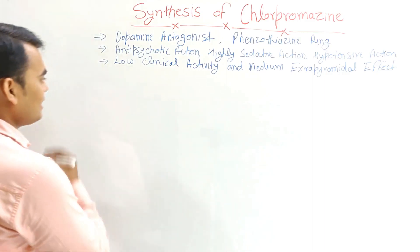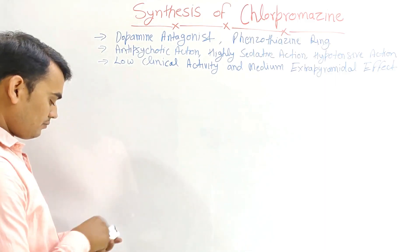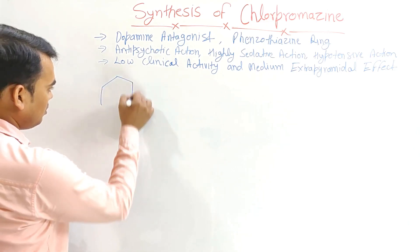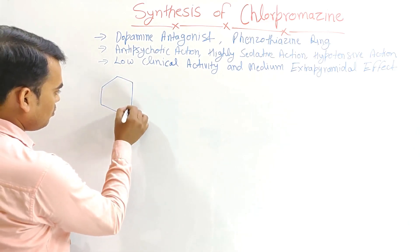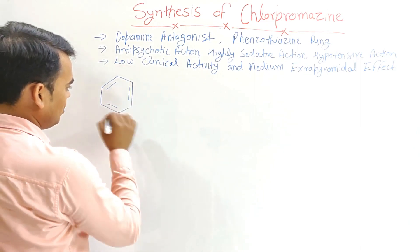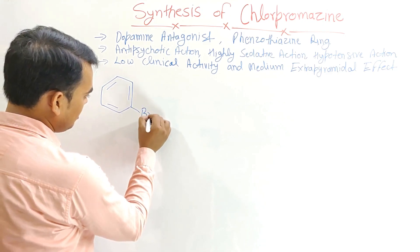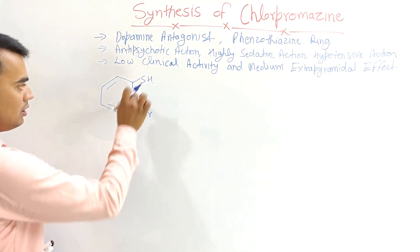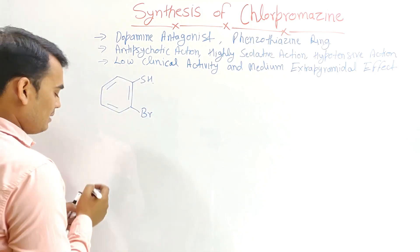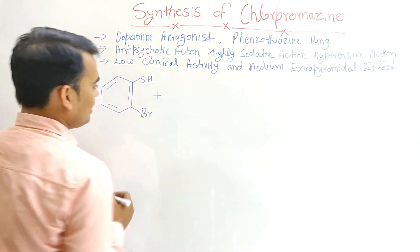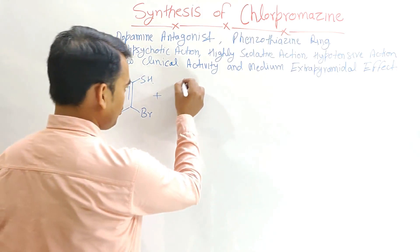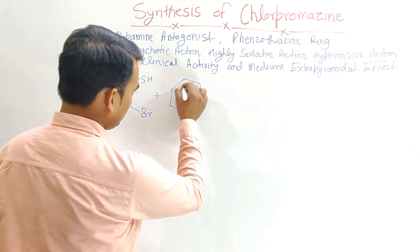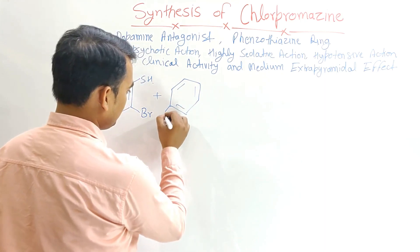Chlorpromazine is synthesized from 2-bromobenzthiol. This is the thiol group (SH) at position 1, with bromine at position 2 — so this is 2-bromobenzthiol. When reacted with 2,5-dichloronitrobenzene...